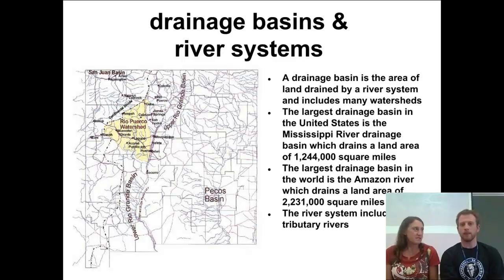So drainage basins are kind of similar to watersheds in that drainage basins are areas of land that are drained by a river system. And a river system could include lots of different watersheds. So like a smaller river can drain a smaller area but then join up to a bigger river and then becomes part of that watershed? Well, the watershed is the smaller river. The land that drains into the smaller river. The drainage basin would be all the smaller river's watersheds together. Gotcha.